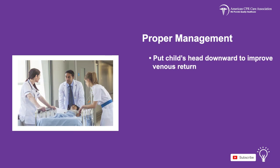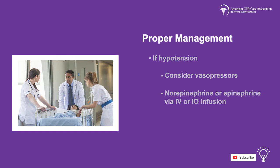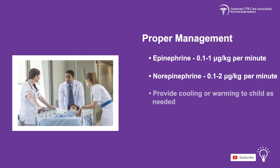Position the child's head downward to improve venous return. If the child exhibits hypotension, consider using vasopressors such as norepinephrine or epinephrine: 0.1 to 1 microgram per kg of epinephrine per minute via IV or IO infusion, or 0.1 to 2 micrograms per kg of norepinephrine per minute via IV or IO infusion. Provide cooling or warming to the patient as needed.